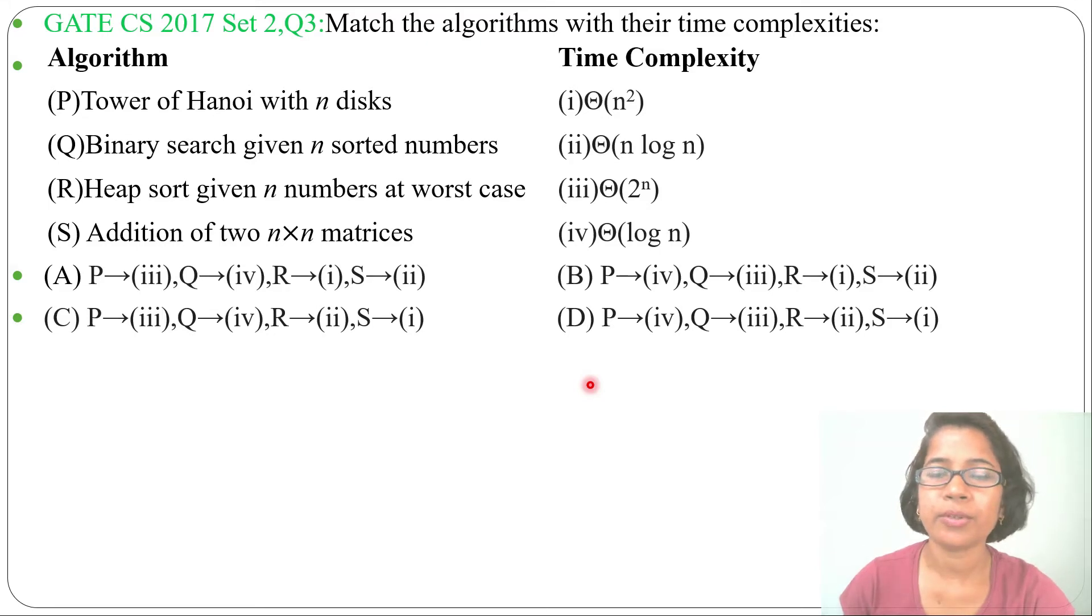Hi, let's hop on a previous question of algorithm analysis. This question was asked in GATE CS 2017 Set 2, Question 3. Match the algorithms with their time complexity. Some algorithms are given, some time complexities are given, and four options are provided.